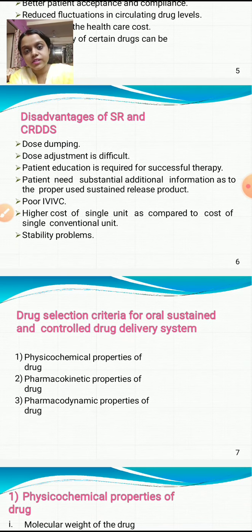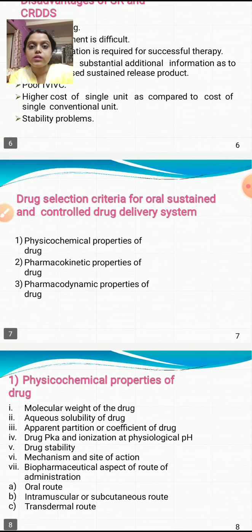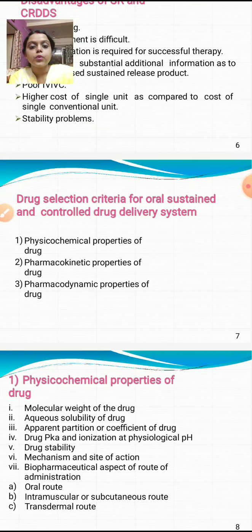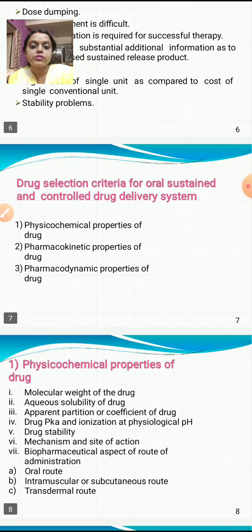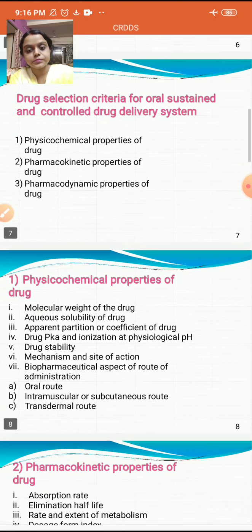Drug selection criteria for oral sustained and controlled drug delivery systems are of three types: the physicochemical properties of the drug, the pharmacokinetic properties of the drug, and the pharmacodynamic properties of the drug.